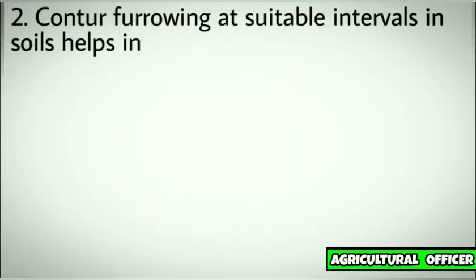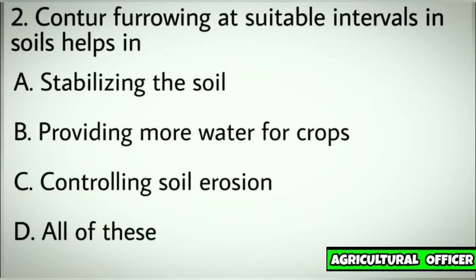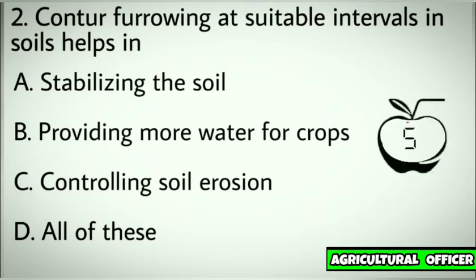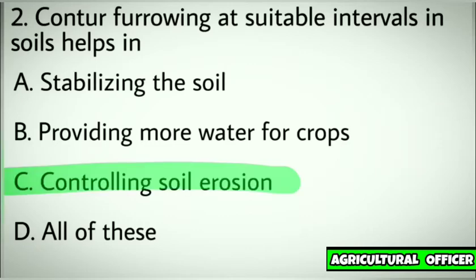Question number two. Contour furrowing at suitable intervals in soils helps in. Options: A. Stabilizing the soil. B. Providing more water for crops. C. Controlling soil erosion. D. All of these. Correct answer: C. Controlling soil erosion.